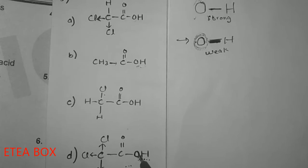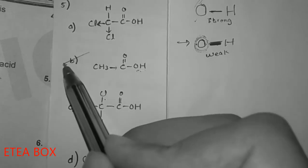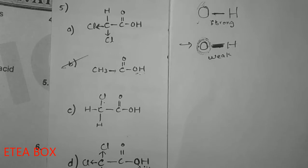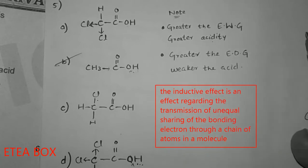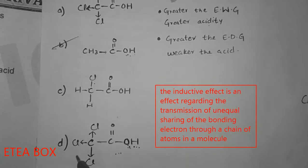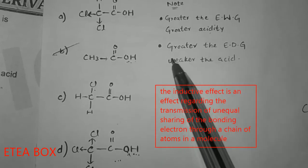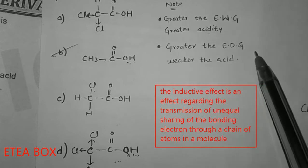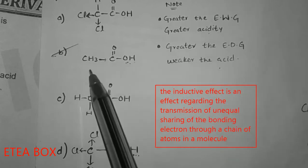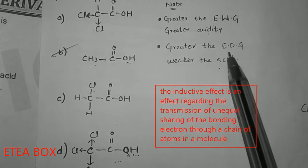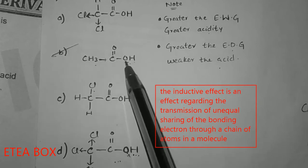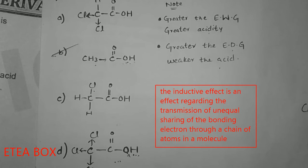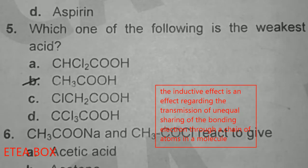In conclusion: greater the electron-withdrawing group, stronger the acid. Option D with three chlorine atoms is the strongest acid. The other key point: greater the electron-donating group, weaker the acid. Option B has an electron-donating group present, so it is the weakest acid due to the strong O–H bond. So option B is correct — acetic acid is the weakest acid.